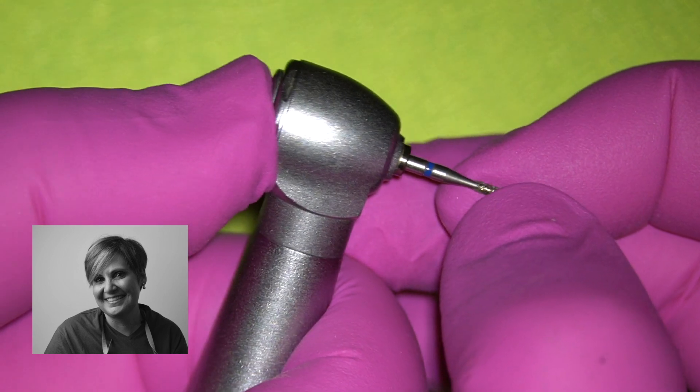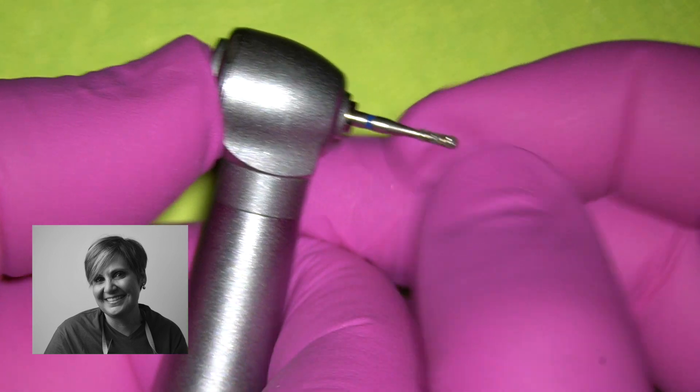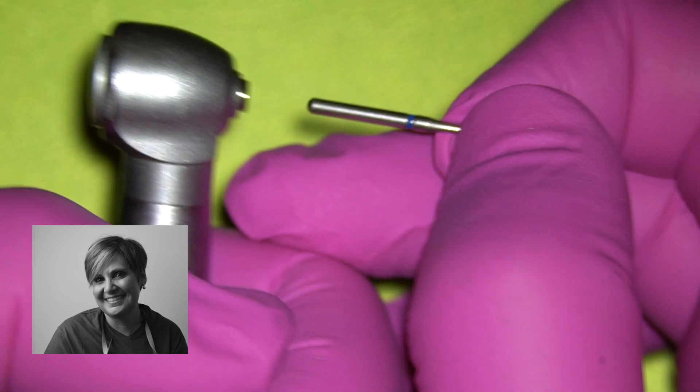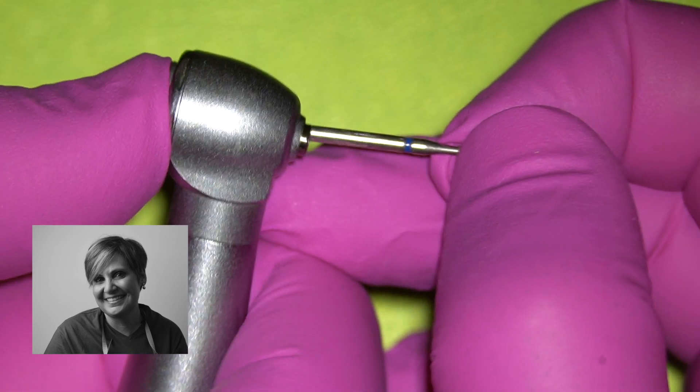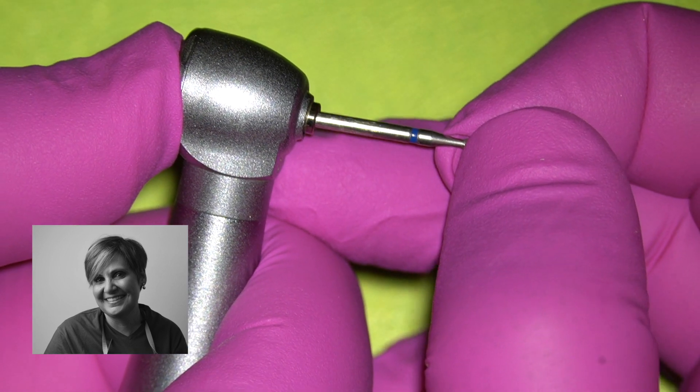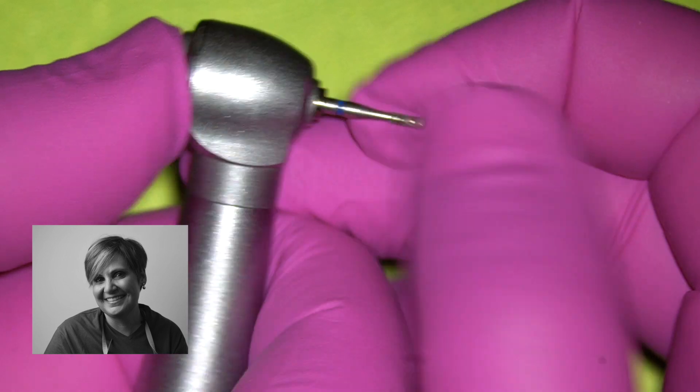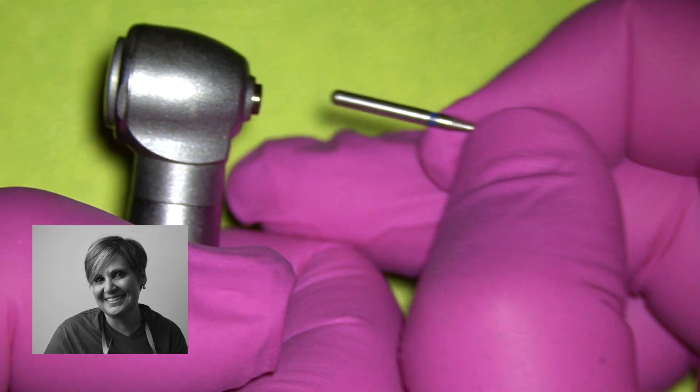The first problem is that the shank of a cheap bur doesn't fit exactly in the handpiece. As you can see here, I insert a no-name bur and I detach it very easily.